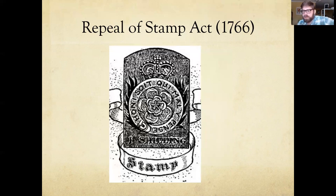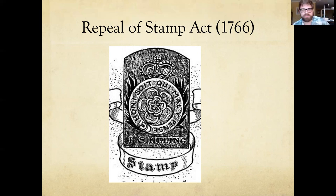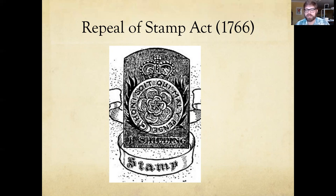Just one year after passing the Stamp Act, the British government walks it back, saying they moved too quickly and it's leading to too much protest. But by this point people are angry, and simply repealing one tax isn't going to satisfy them. Tensions keep increasing. A few years later in 1770, there's the Boston Massacre, which we'll explore in our case study video, which further inflames tensions.